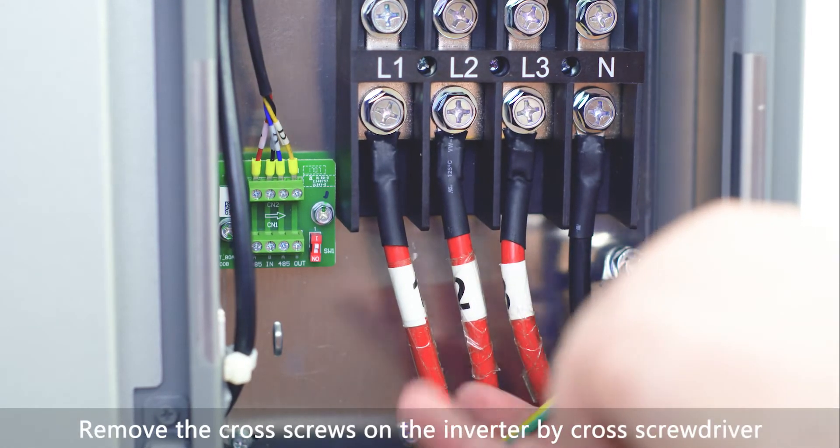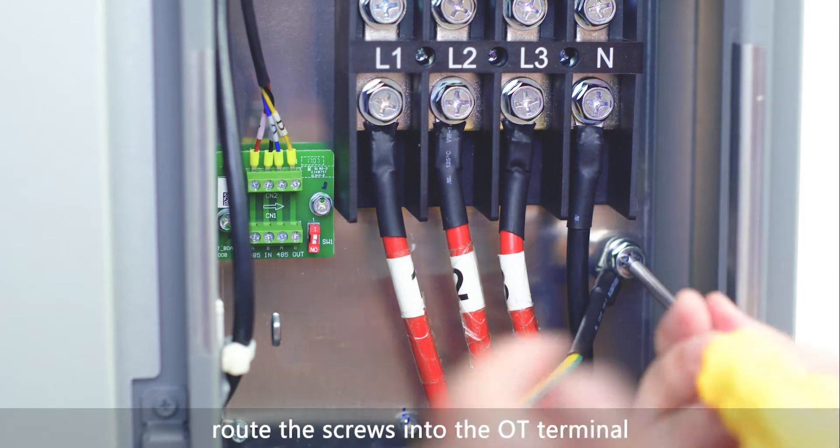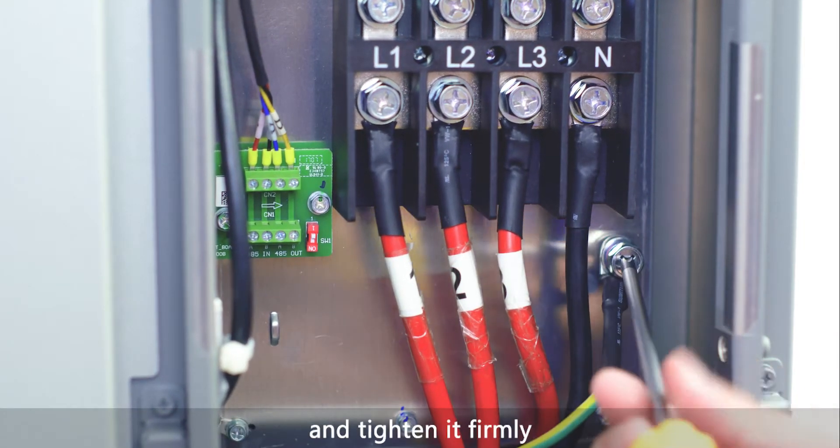Remove the cross screws on the inverter by cross screwdriver. Route the screws into the OT terminal and tighten it firmly.